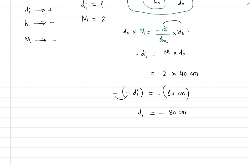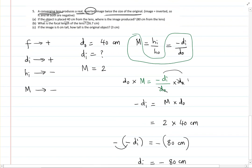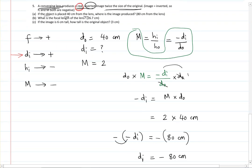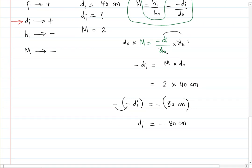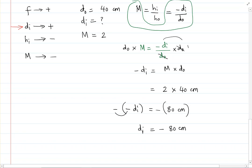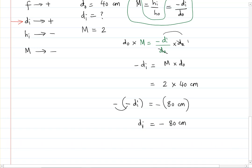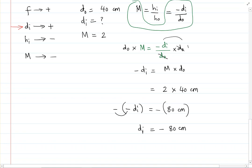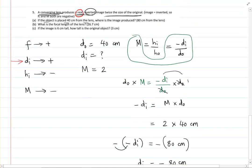Now pause and check the validity of this answer. We said di should be positive because it's a real image — but we got a negative di. That's an indication of a mistake. You should always stop and check the validity of your answer. Clearly there has been a mistake in the calculation. Pause the video and try to find the error.